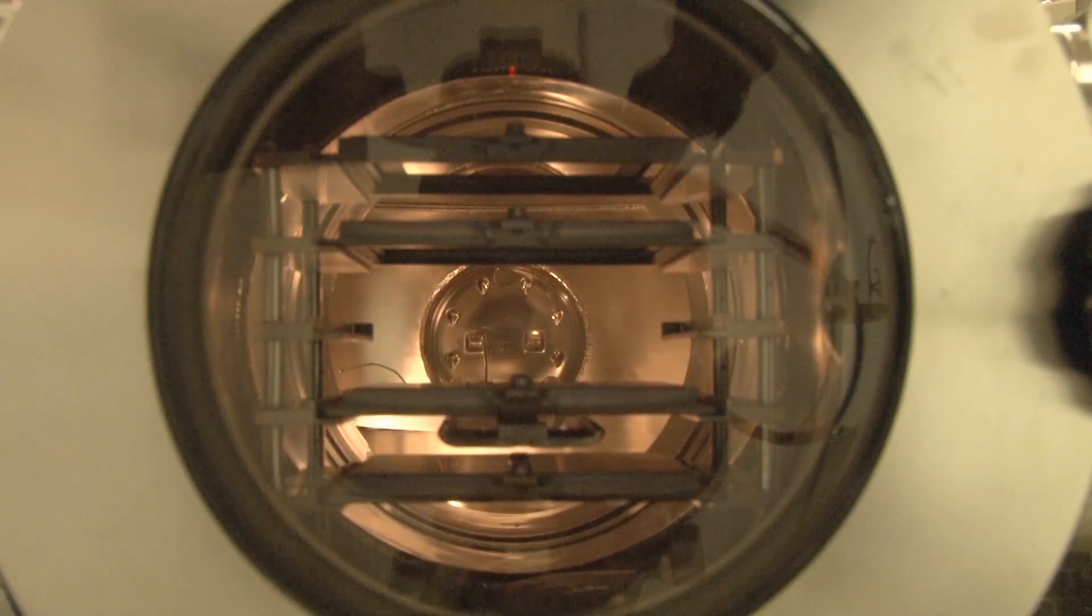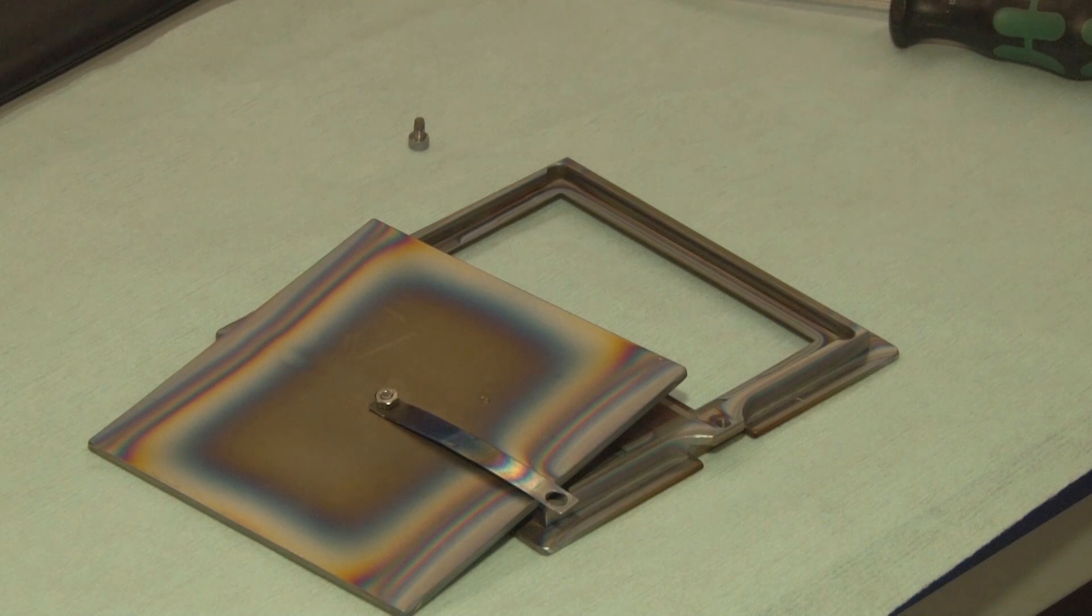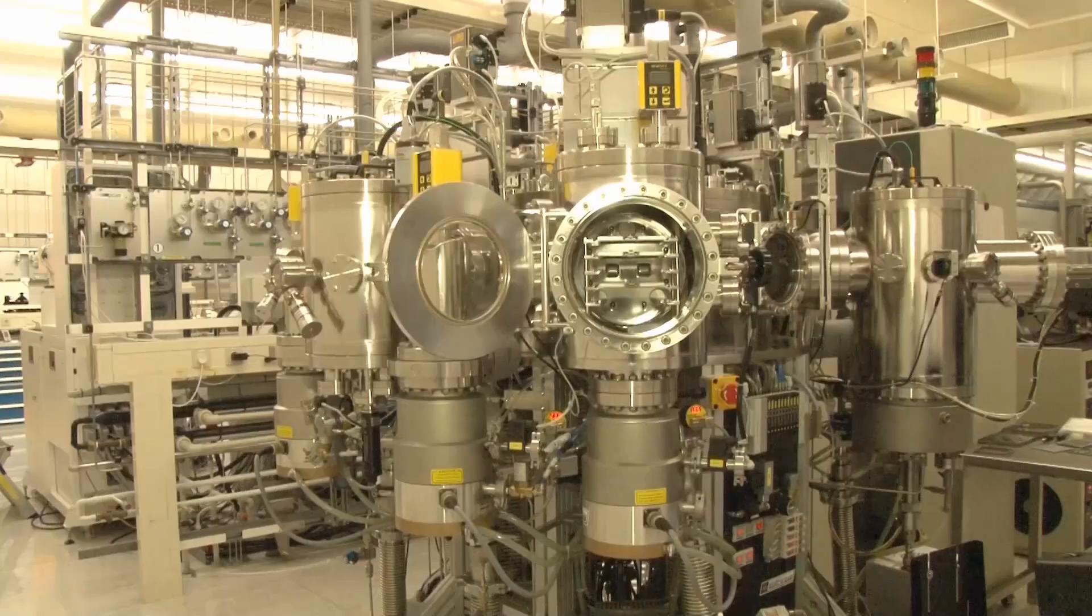The samples are moved from chamber to chamber through the load lock. After the various silicon deposition steps, the sample with a thin film silicon PIN junction on top looks like this.